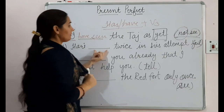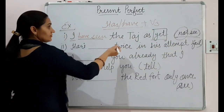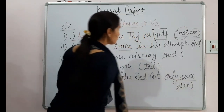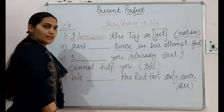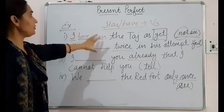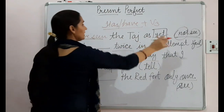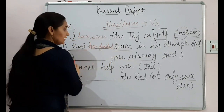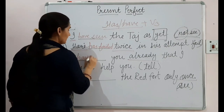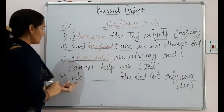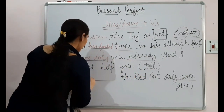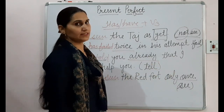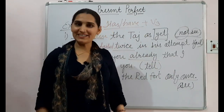Second example: 'Hurry has failed twice in his attempt.' The word 'twice' is a signal word for present perfect. 'Hurry' is a singular noun, so we use 'has'. Third form of 'fail' is 'failed' — 'has failed'. Third example: 'I have seen the Red Fort only once.' Here 'once' is a signal word, the subject is 'I', so we use 'have', and third form of 'see' is 'seen'. This concludes the exercise and explanation of present perfect tense.